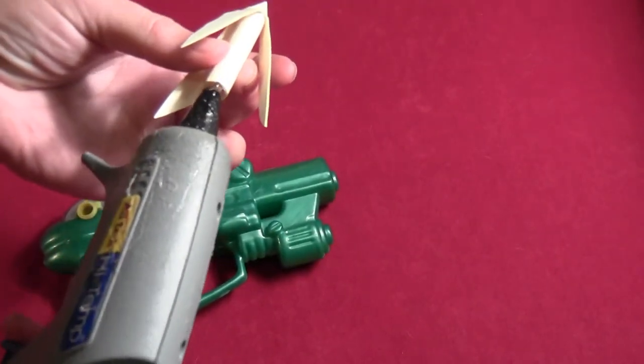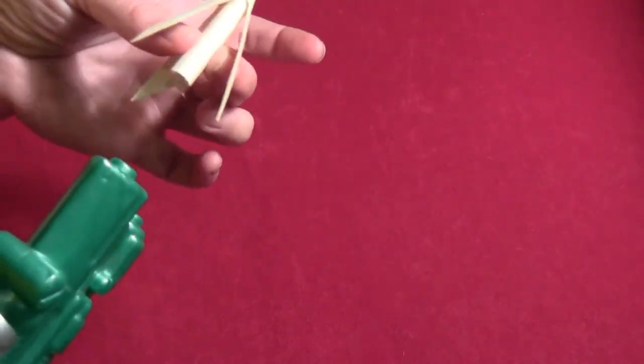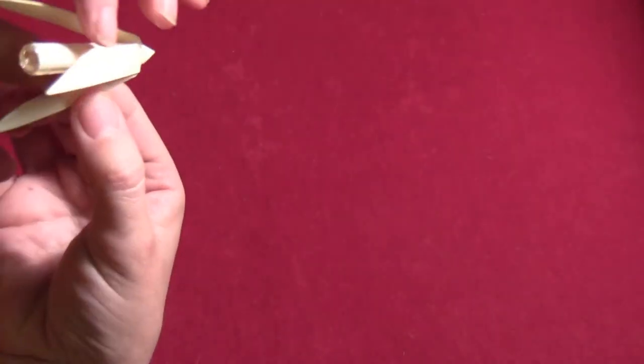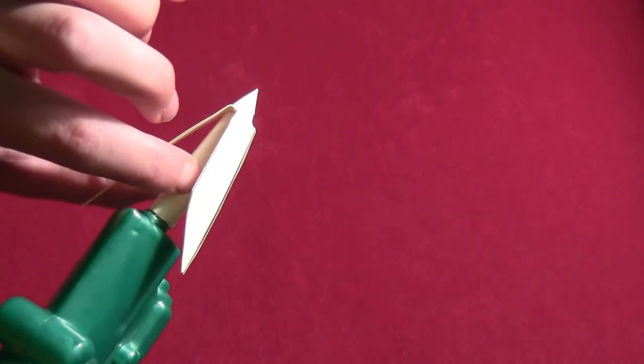So then once your coatings of glue are dry, you might have put three coatings on it. Once the coatings of glue are dry, just put some hot glue on the bottom of the cylinder and glue that right to the end of your plastic toy gun.